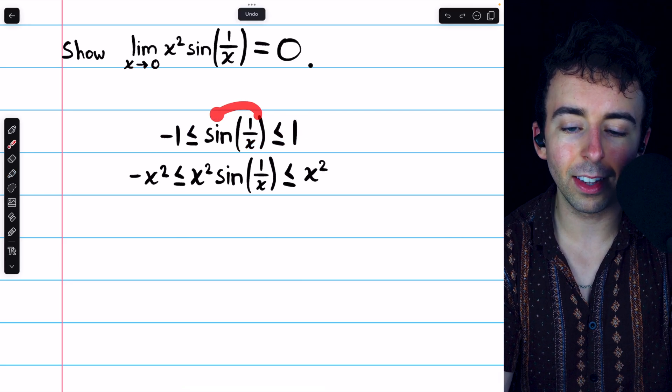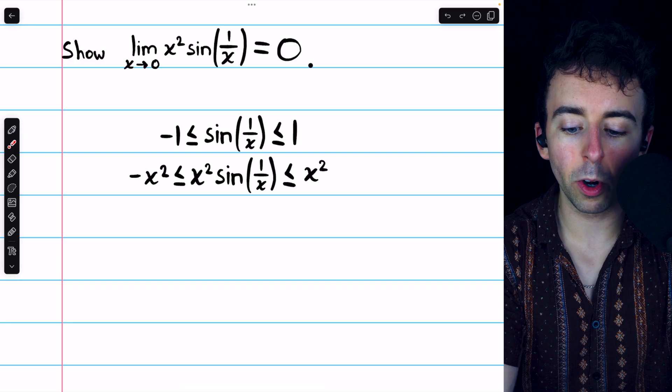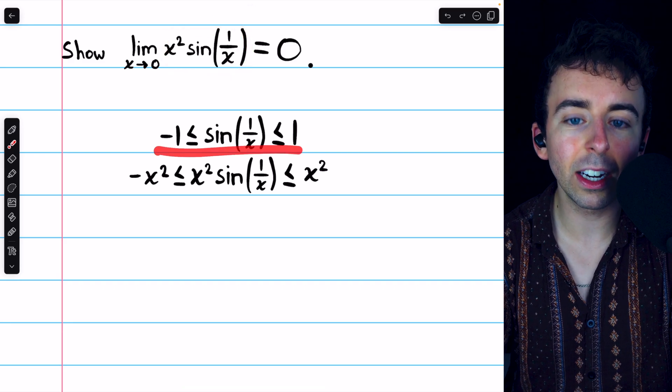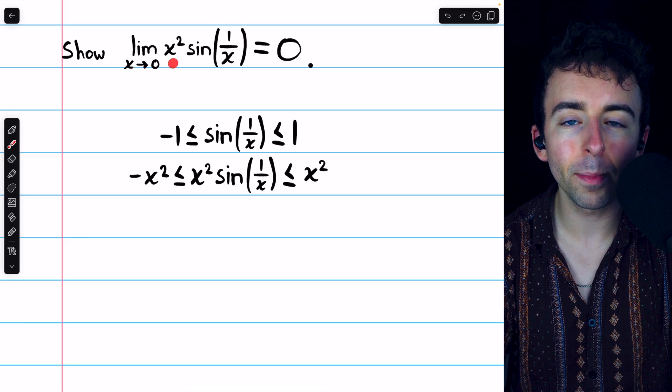Then, we must make this, in the middle, match what we're actually trying to evaluate. So, we'll multiply through the inequality by x squared.